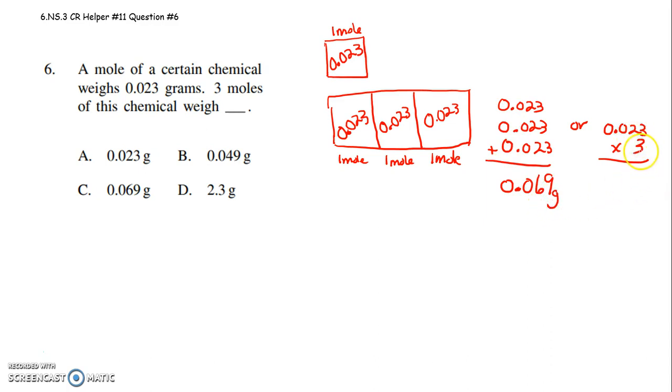Now let's go ahead and multiply. 3 times 3 is 9. 3 times 2 is 6. 3 times 0 is 0. 3 times 0 is 0. If that decimal point is moved over three places, then in our answer, our decimal point must be moved over three places.